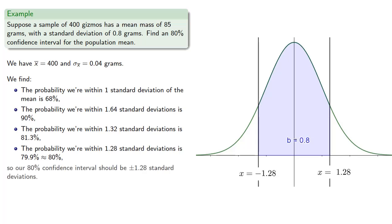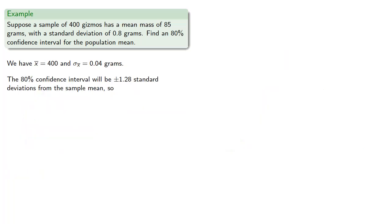So our 80% confidence interval should be plus or minus 1.28 standard deviations of the mean. And so the 80% confidence interval will be plus or minus 1.28 standard deviations from the sample mean. And so we find...